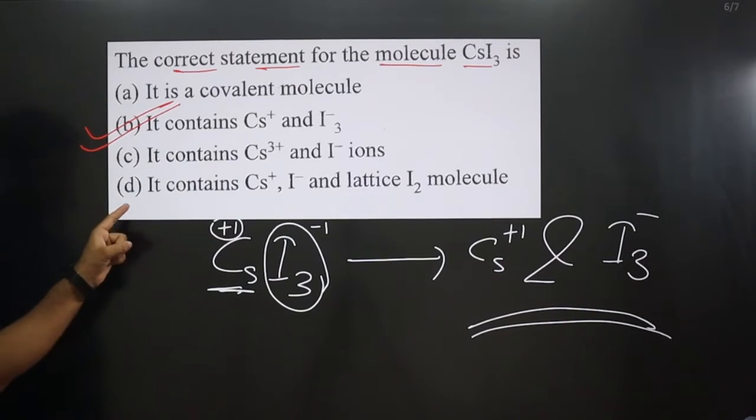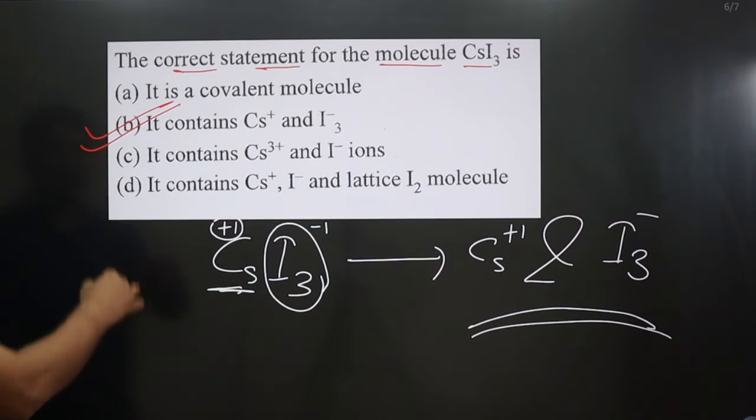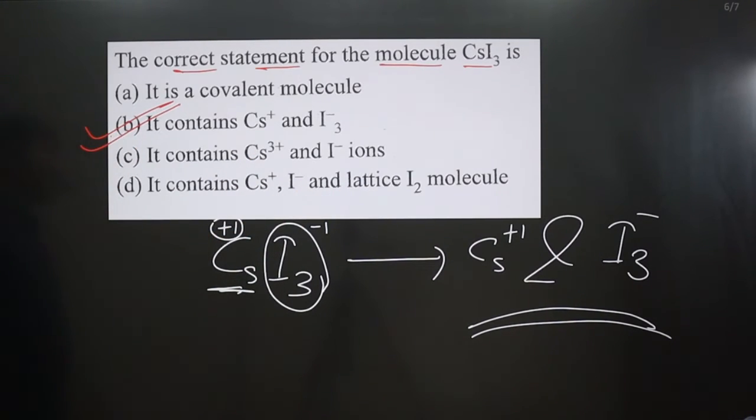Option D: It contains Cs⁺ I⁻ lattice? No, not really. It is not correct either. We have option B is correct.